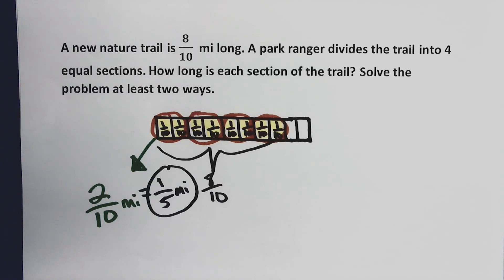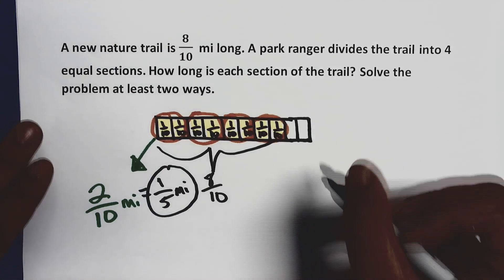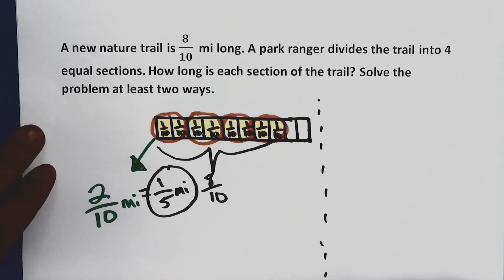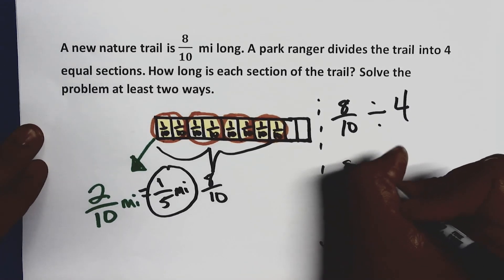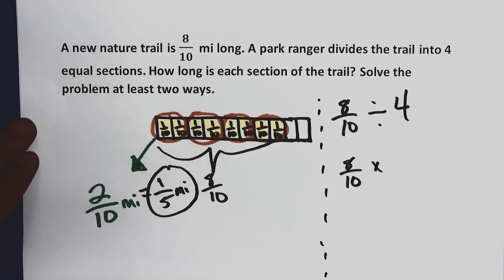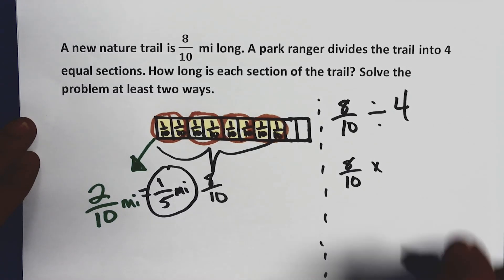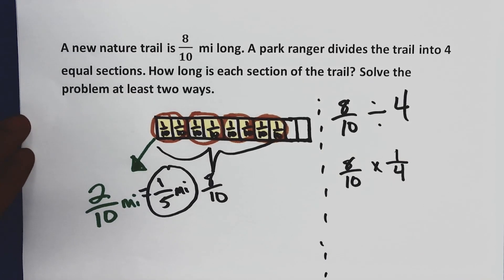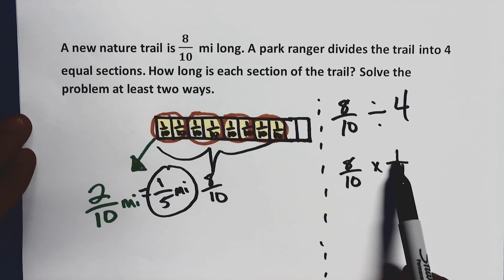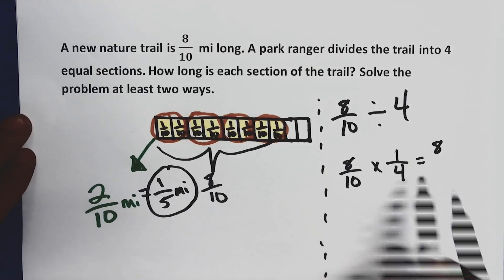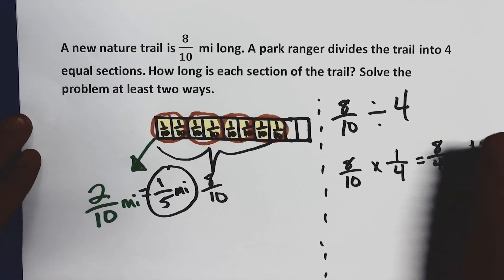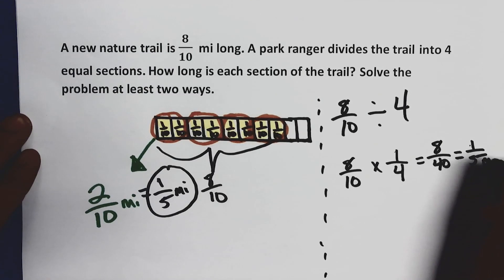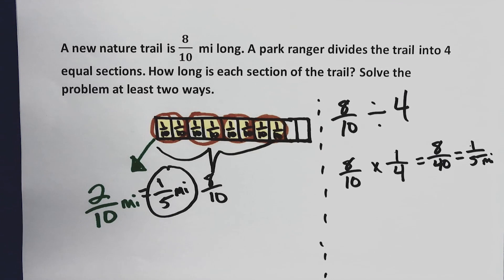Another way I'm going to solve this is by multiplying by the reciprocal. Taking the information I know from the problem: eight-tenths divided by four. I'm bringing down my eight-tenths and multiplying by the reciprocal of four, which is one-fourth. Eight times one gives me eight as my numerator, and ten times four gives me forty as my denominator. Eight over forty is equivalent to one-fifth of a mile. Good job — two ways and we got the same answer.